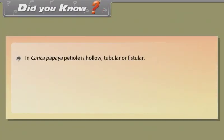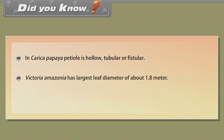Did you know? In Carica papaya, petiole is hollow, tubular or fistular. Victoria Amazonica has largest leaf, diameter of about 1.8 meters. Longest leaf is of Raffia vinifera of about 10 to 15 meters.